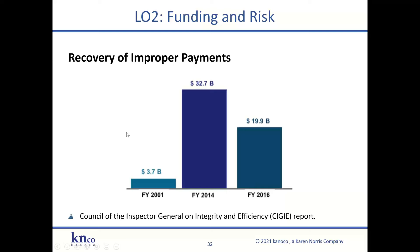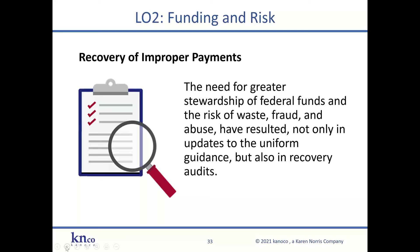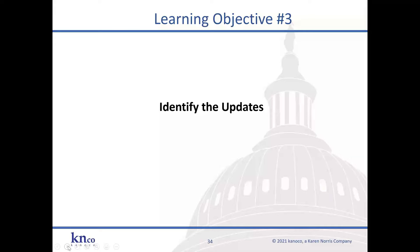Here are some examples of improper payments. In 2014, when the Uniform Guidance first became effective for non-federal entities, federal agencies recovered more than $32 billion of award funding. Since 2016, it has been about $20 billion a year taken back. That number is expected to go up because of COVID funding. The need for greater stewardship and the risk of waste, fraud, and abuse have resulted not only in updates to the Uniform Guidance but also in these recovery audits.